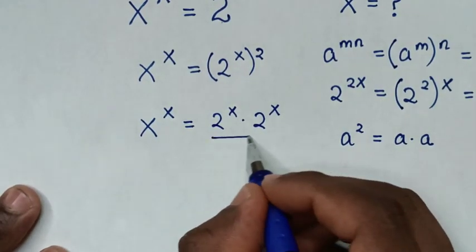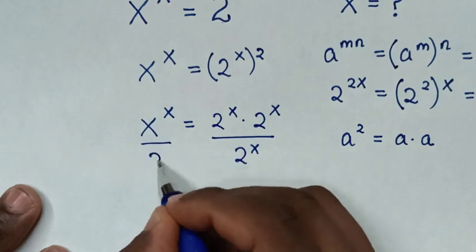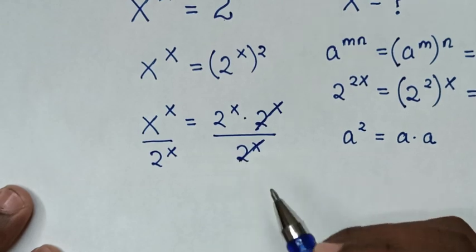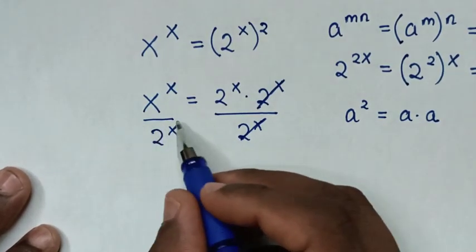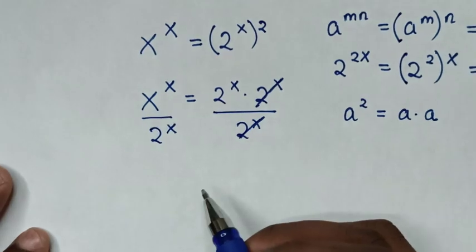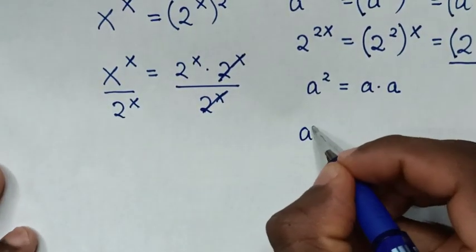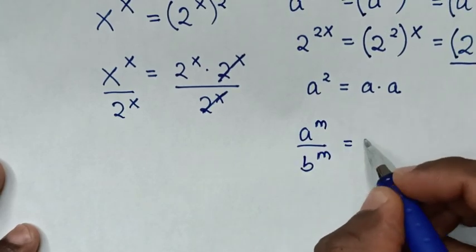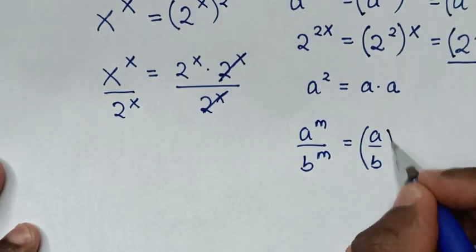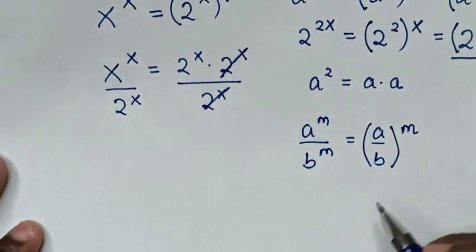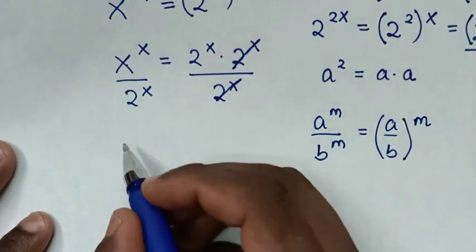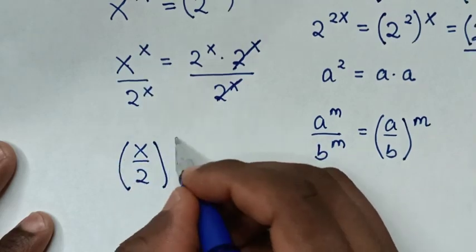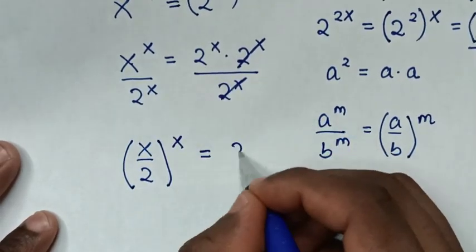In the next step, we will divide by 2 power of x on both sides. Then 2 power of x will cancel with this 2 power of x. So from here, x power of x over 2 power of x is in the form of the exponential rule, giving us x over 2 bracket power of x, which is equal to 2 power of x.